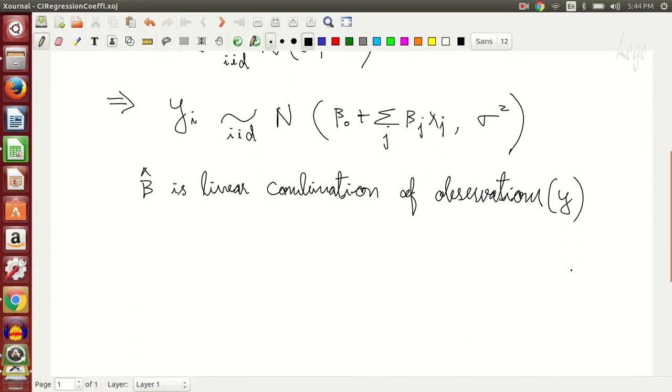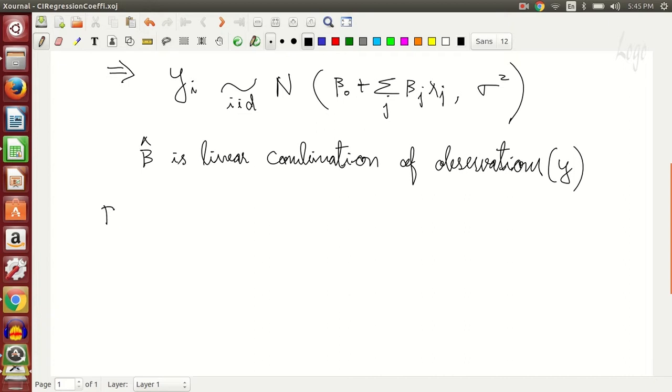Since beta hat is a linear combination of observations which are y, beta hat has a term which is a linear combination of y. This also follows a normal distribution with mean and covariance matrix.